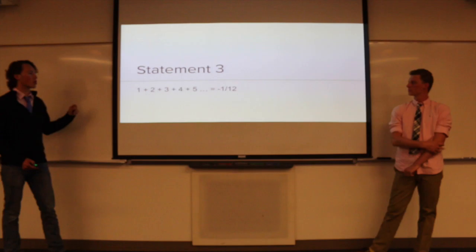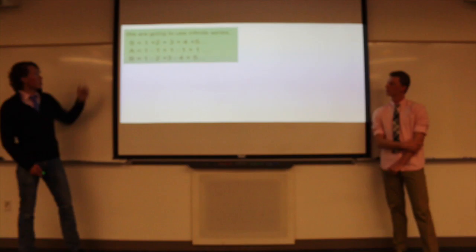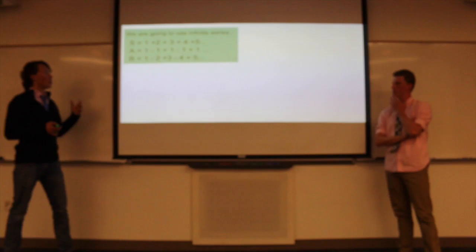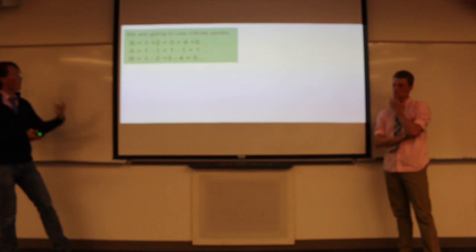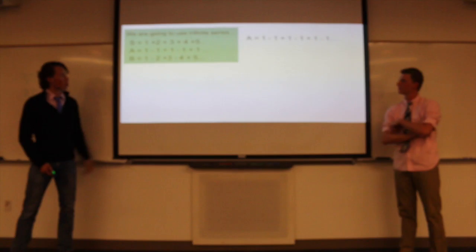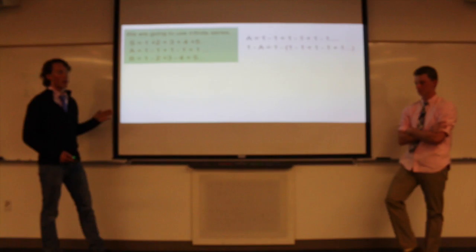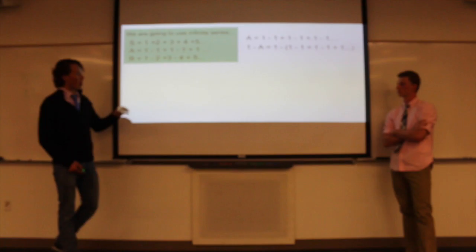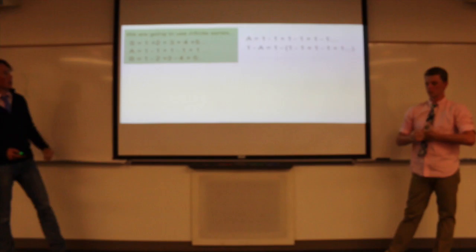And now for our third mathematical proof, which is 1 plus 2 plus 3 plus 4 plus 5 all the way out, all the positive integers equals negative 1/12. And to do this we are going to look at 3 infinite series named S, series A, and series B. We're going to use series A and series B to find numbers that will then, because series A and series B equal certain numbers, we're going to find those and then we're going to see what S equals.